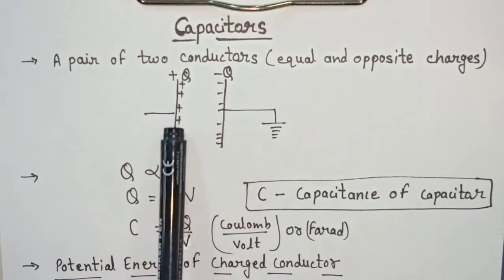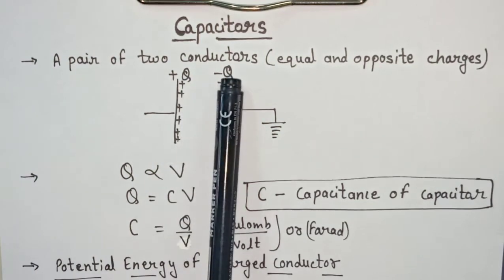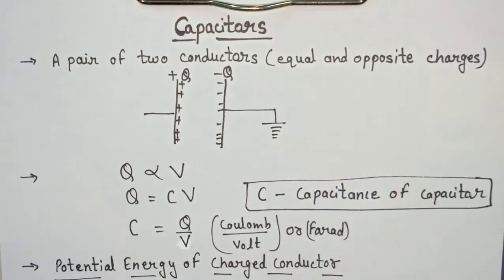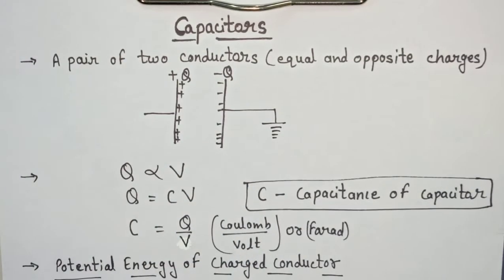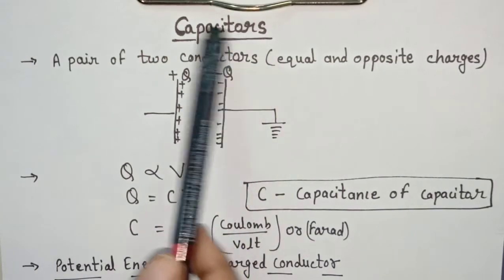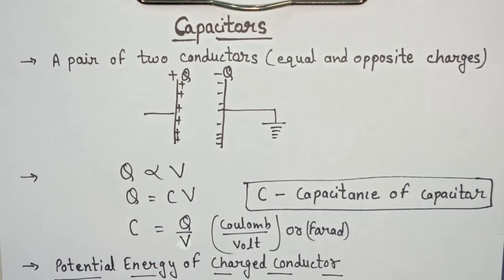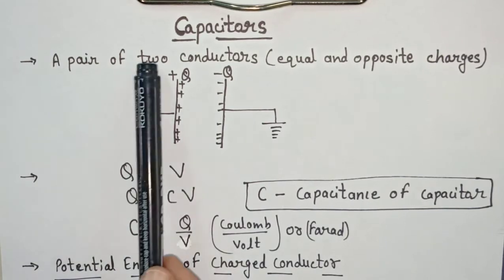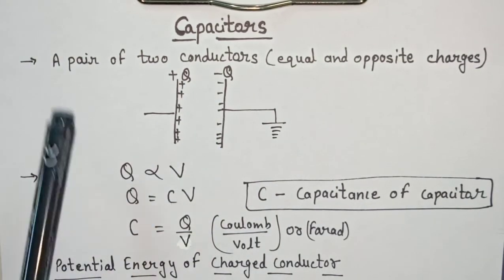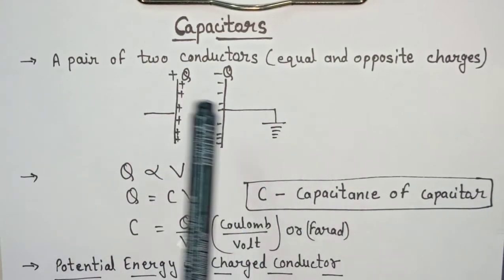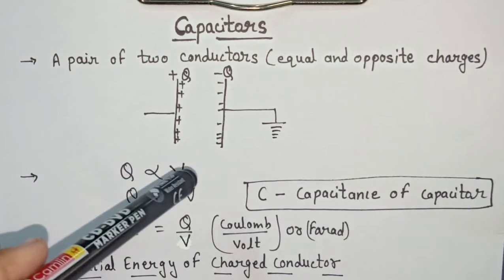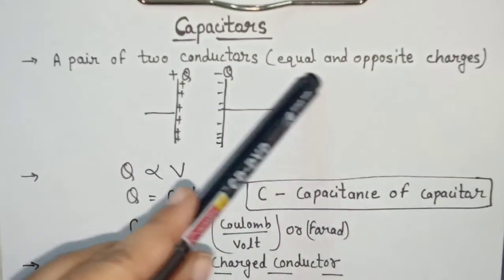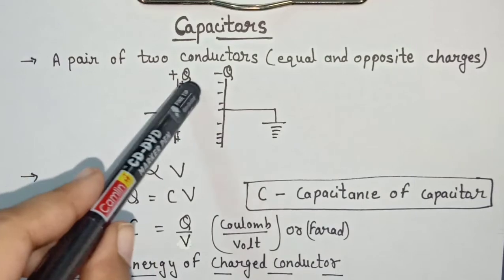We have two plane sheets of equal charges — one is +Q and the other is −Q. Both have equal charge magnitude Q, but polarity is opposite. So a capacitor is an arrangement of two equal and opposite plane sheets of charges. These two conductors can be of any shape — they don't have to be plane sheets. They could be spherical or any other shape.